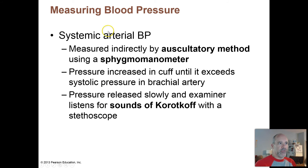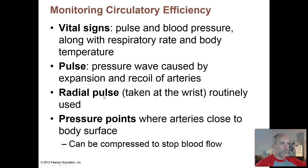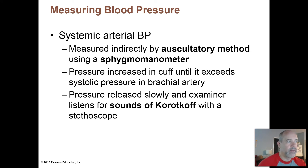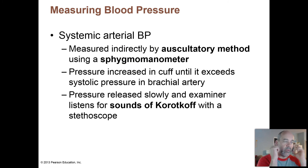When we measure blood pressure, systemic arterial blood pressure is traditionally measured using an auscultatory method — that means you're listening — using a sphygmomanometer. That is the traditional blood pressure cuff where you use a stethoscope, placing it under the cuff and listening for the sounds of blood flow.